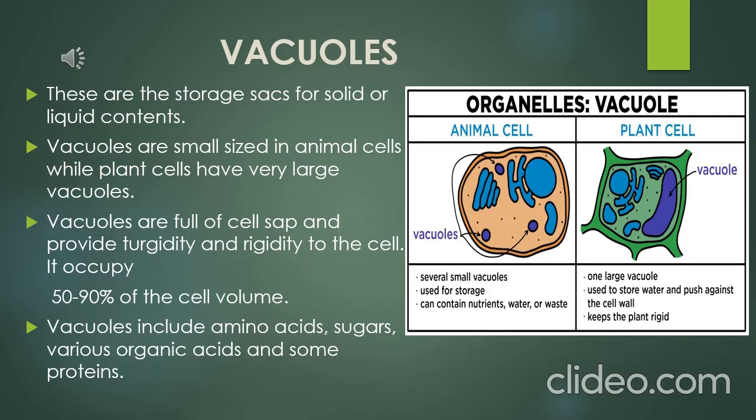As shown in the picture, in animal cells there are smaller vacuoles and they are several in number, whereas in plant cells there is one big vacuole present. These vacuoles are full of cell sap and provide turgidity and rigidity to the cell.